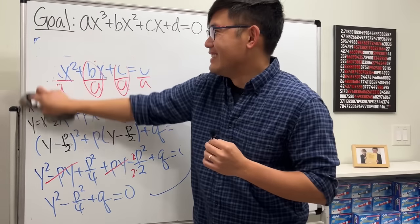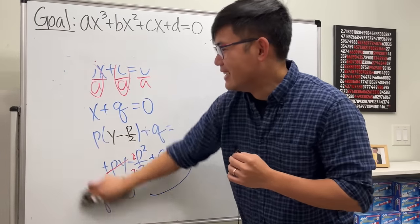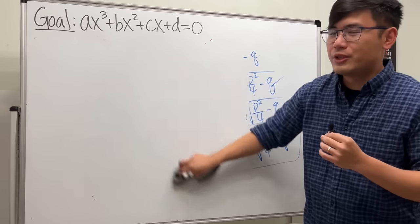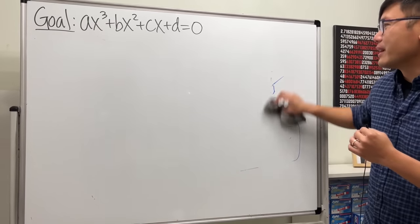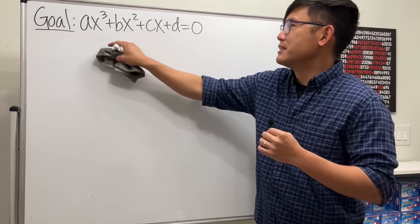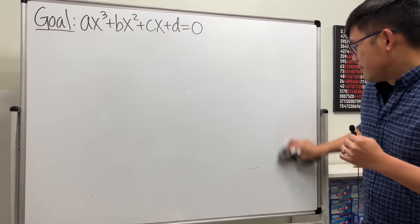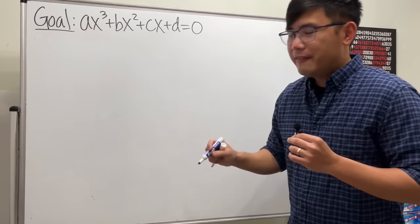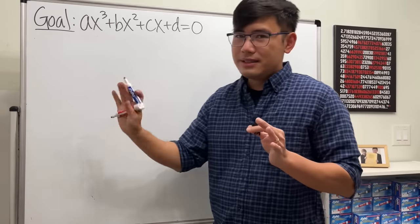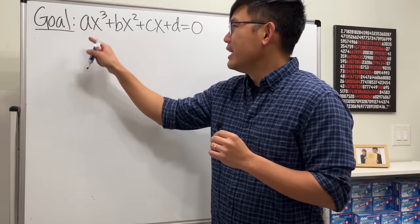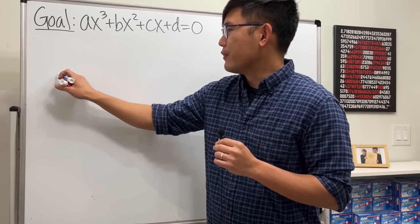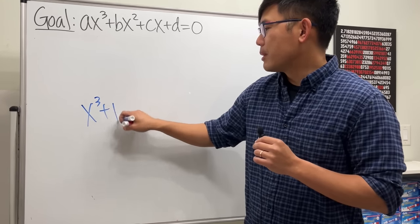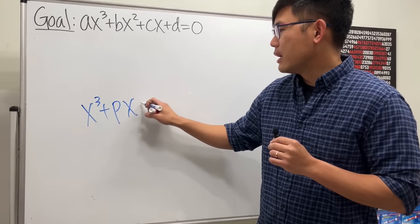That was enough warm-up, and we are going to see how to deal with the cubic right now. The question is: what transformation do we want so that we can get rid of one of these terms? It's tough, right?